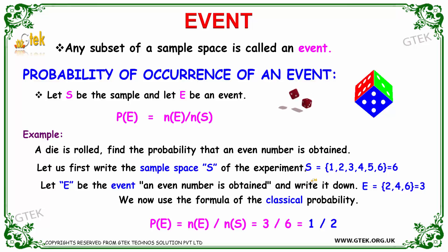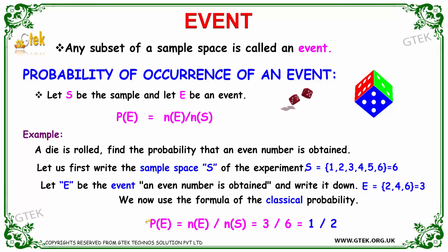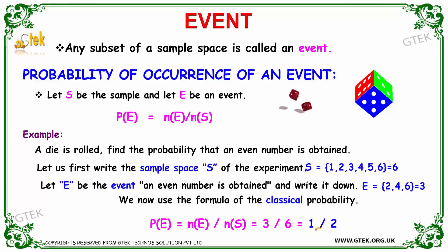The sample space S = {1, 2, 3, 4, 5, 6}, so there are 6 possibilities. For an even number, 2, 4, and 6 are the even numbers — the count is 3. So the probability of the event is equal to the number of possibilities satisfying the condition divided by the sample space, which gives 3 divided by 6, which equals 1/2. The probability is 1/2.